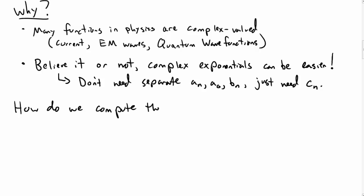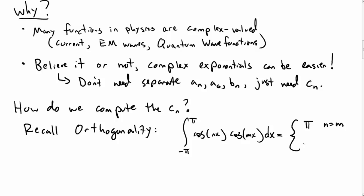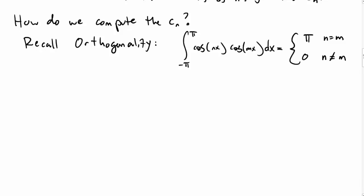So how do we compute these c_n's, these coefficients of the complex exponentials? So, let's just recall orthogonality from a previous video. Orthogonality is that the integral from -π to π, cos(nx) cos(mx) dx, is equal to either π if n is equal to m, or 0 if n is not equal to m.